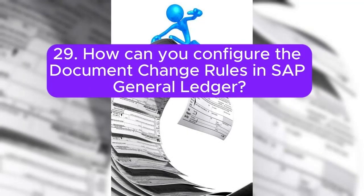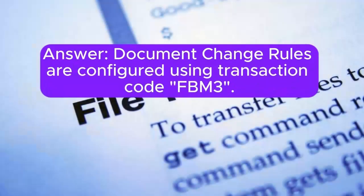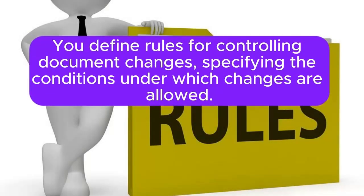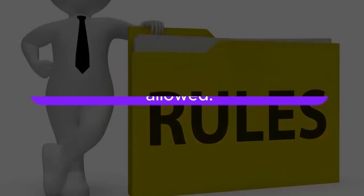Question 29: How can you configure the document change rules in SAP General Ledger? Answer: Document change rules are configured using transaction code OB32. You define rules for controlling document changes, specifying the conditions under which changes are allowed.